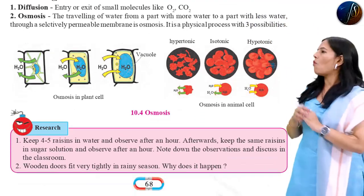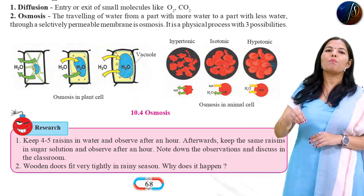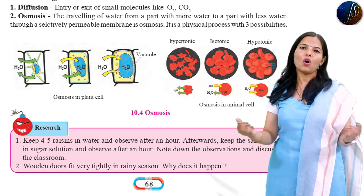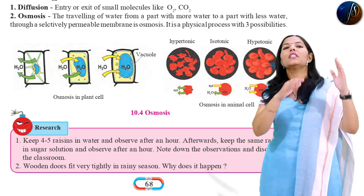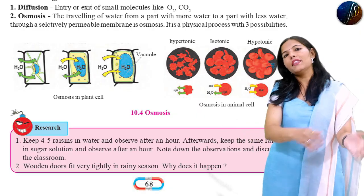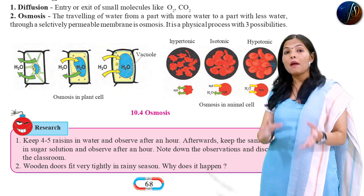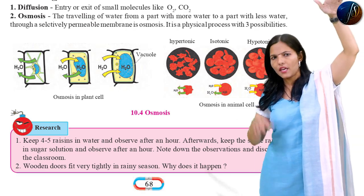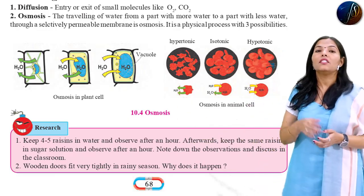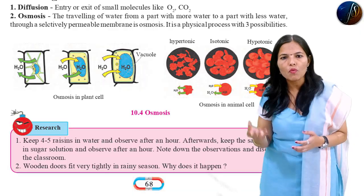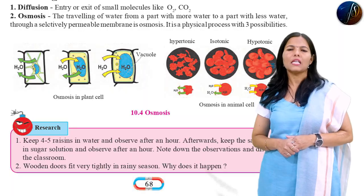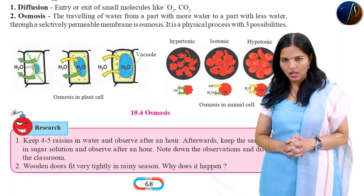The traveling of water from the part with more water to the part with less water through a selectively permeable membrane is called osmosis. This process is called osmosis.